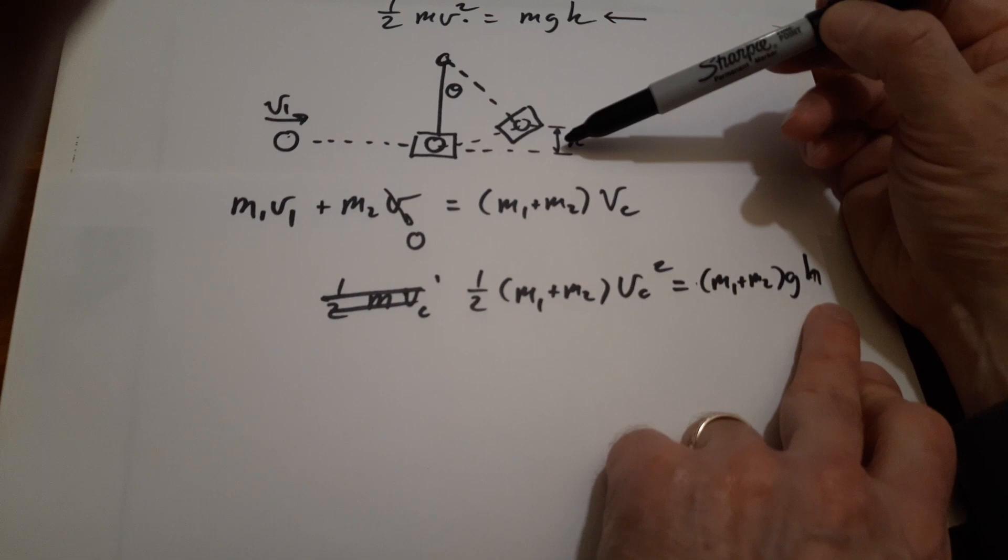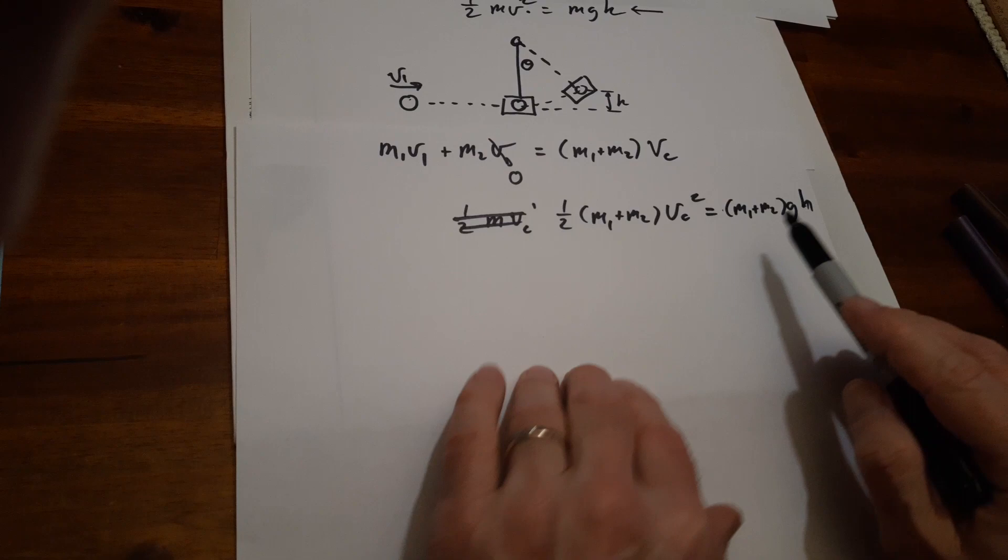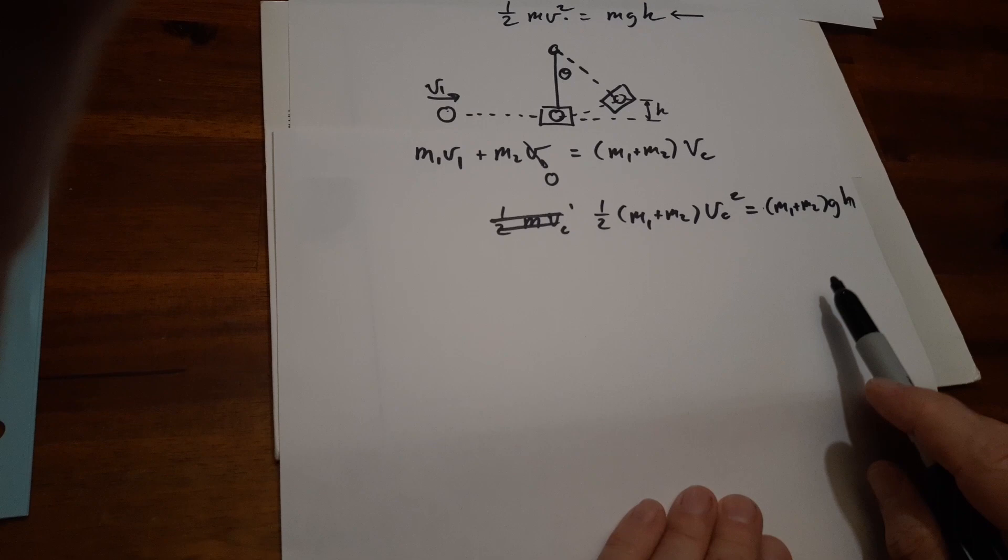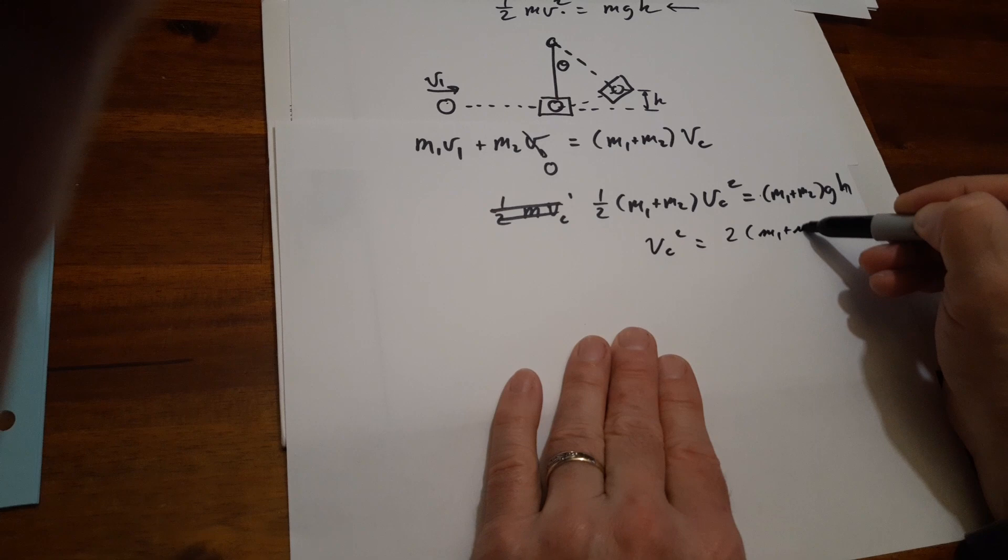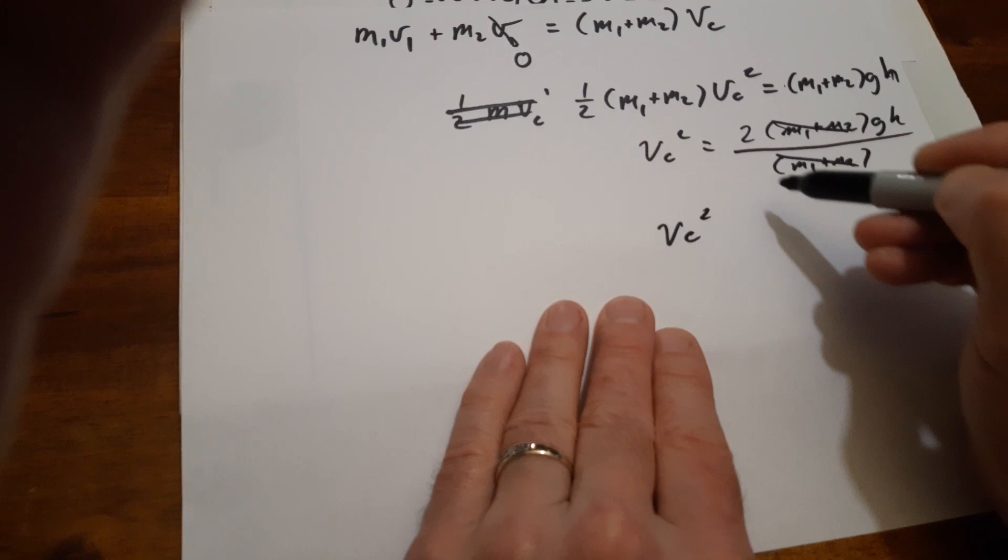So now let's work backwards. I can measure that. Gravity is a constant and H I can measure. So when all is said and done, do a little algebra. These guys cancel and we get simply my velocity at the beginning is just 2GH, velocity squared, which means velocity is just the square root of 2GH.